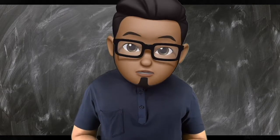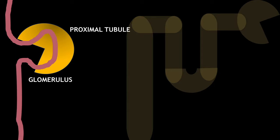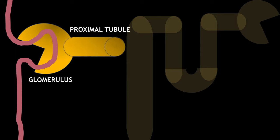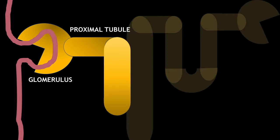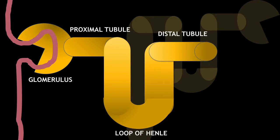Always remember that the nephron, which is the functional unit of the kidney, has two parts: your glomerulus and your tubules. Your glomerulus is involved in the filtration process. The ultrafiltrate then goes to the proximal tubule, down the loop of Henle, then up the distal tubule, and finally into the collecting duct.